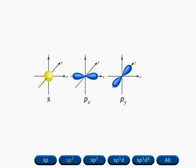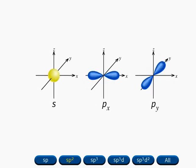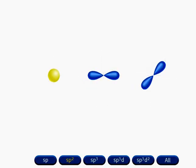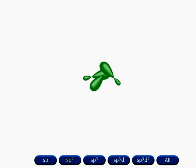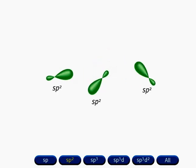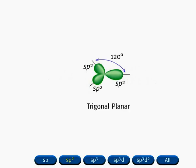Mixing an s orbital with two of the p orbitals generates three equivalent sp² hybrid orbitals. Note that the number of hybrid orbitals produced is equal to the number of atomic orbitals that are hybridized. The set of three sp² hybrid orbitals has a trigonal planar arrangement, and the angles between the orbitals are 120 degrees.